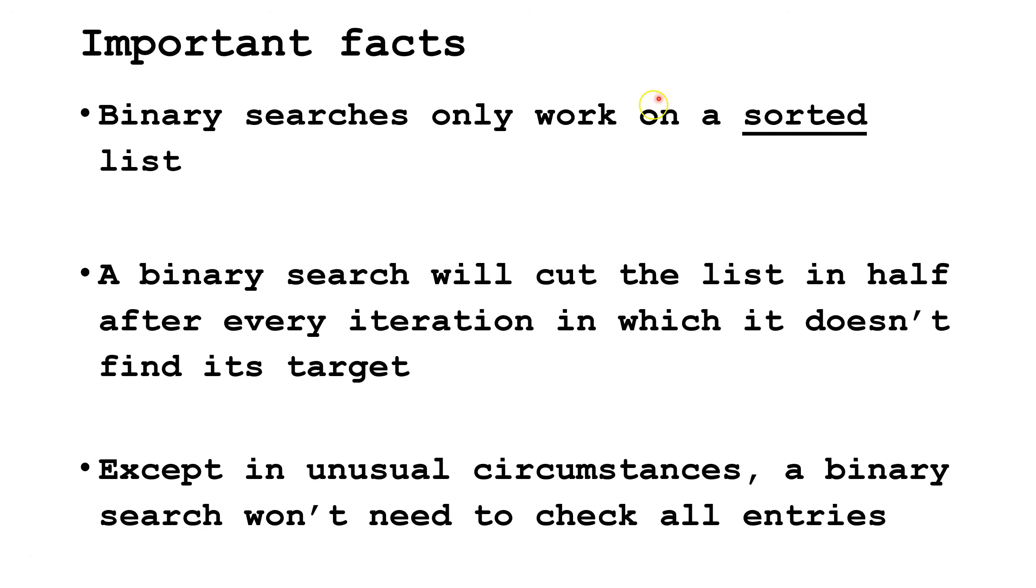Some important facts to know. First, binary searches only work on a sorted list. This is different than a linear search that we learned previously. A binary search will cut the list in half after every iteration in which it doesn't find its target. Finally, except in unusual circumstances, a binary search won't need to check all entries. Because the binary search cuts the list in half every time it doesn't find its target, for large lists it can run much faster than a linear search.